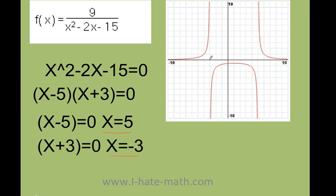When I graph this, my asymptotes are right here. At 1, 2, 3, I have one vertical asymptote, and at 1, 2, 3, 4, 5, I have another vertical asymptote. As you can see, the line gets very, very close but it never touches it.